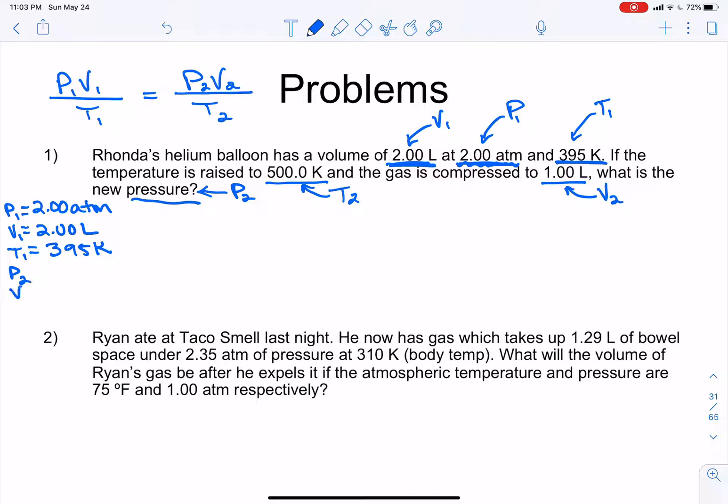Our P2, V2, and T2. P2, what is that? We don't know. We're looking for that. So we get a question mark there. And then V2 is 1 liter. And T2 is 500 kelvin.